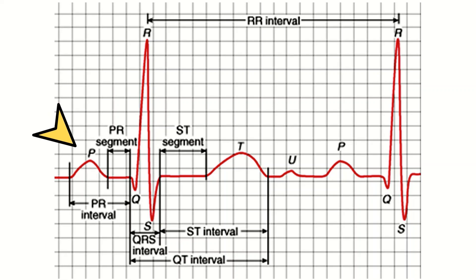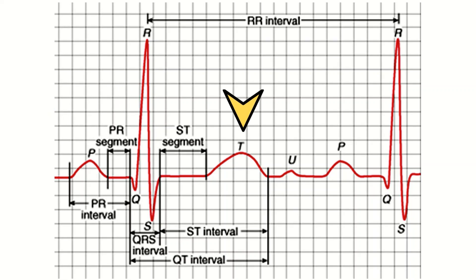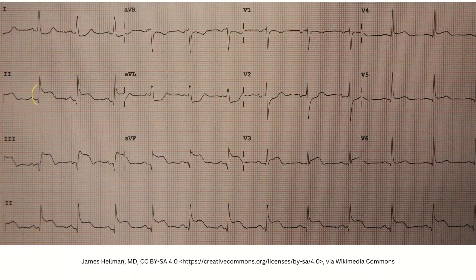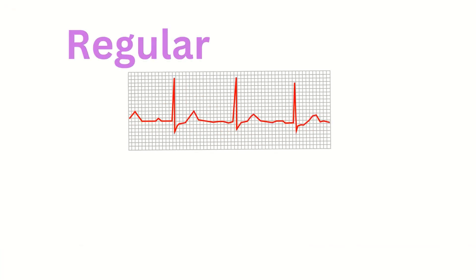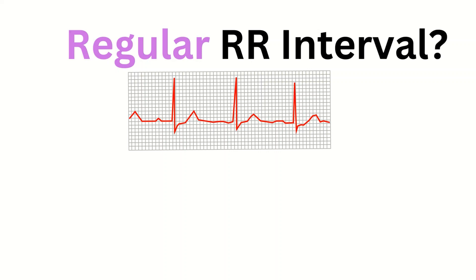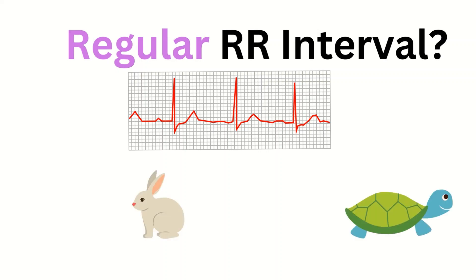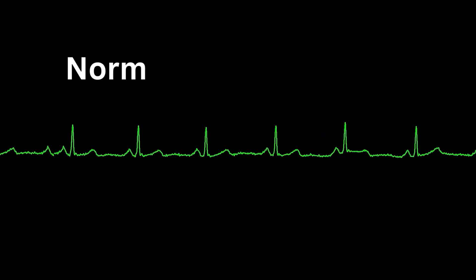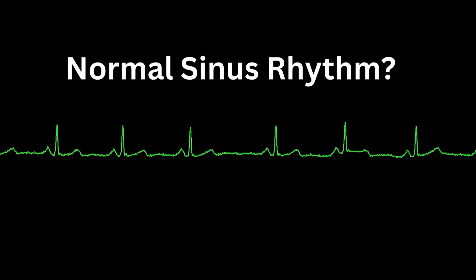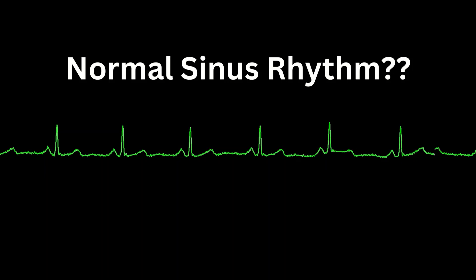I start off with an initial impression. I know what normal sinus rhythm looks like — it starts off with a P wave, followed by a QRS, and then ends with a T wave. I know that a normal ECG does not have ST elevation or depression or T wave inversions. I know that it's regular, that each R wave is equal in length to the next one, and that it's neither too fast nor too slow. With my initial impression, I'm looking to see if it matches my image of what normal sinus rhythm looks like.